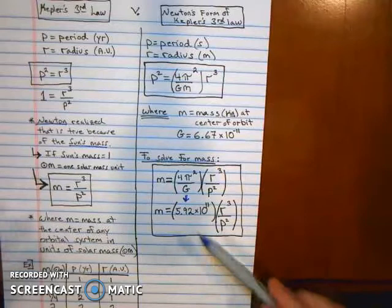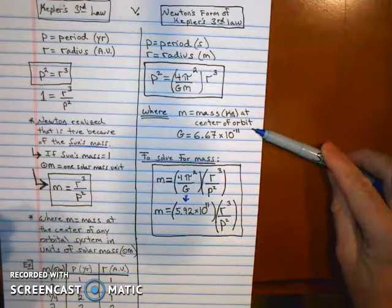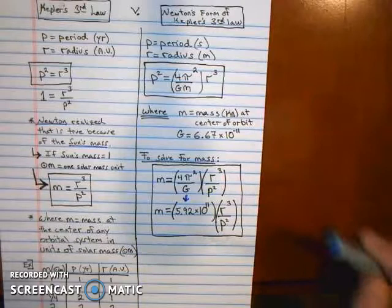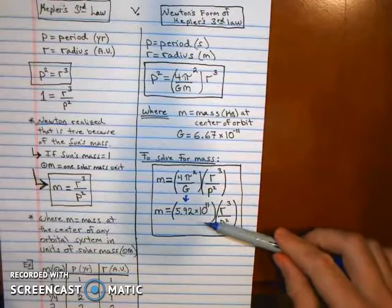It can be applied to figure out the mass at the center of any orbiting system. It's incredible. We use this now to figure out the mass at the center of the Milky Way galaxy, which is a supermassive black hole.